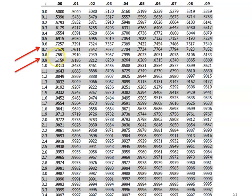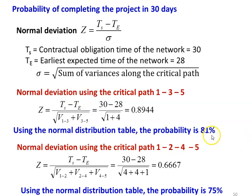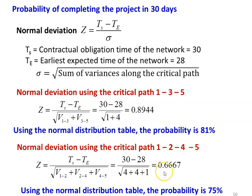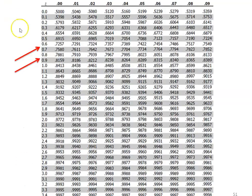From the normal distribution table, for Z = 0.8944, the value falls between 0.7881 and 0.8159; by interpolation the probability is 81%. Using critical path 1-2-4-5: Z = (30 - 28) / sqrt(V(1,2) + V(2,4) + V(4,5)) = 2 / sqrt(4 + 4 + 1) = 0.6667. Using the normal distribution table again, the probability is 75%. So, for Z = 0.6667 the probability is 75%, and for Z = 0.8944 it is 81%.